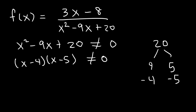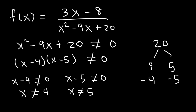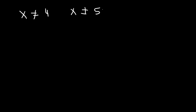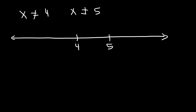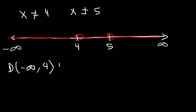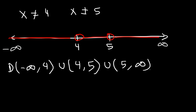So x minus 4 times x minus 5 cannot equal 0. Therefore x minus 4 cannot be 0, and x minus 5 cannot be 0. Adding 4 and 5 to both sides respectively, x cannot equal 4 and x cannot equal 5. To represent this in interval notation, I like to plot everything on a number line. If x can't equal 4, put an open circle; it can't equal 5 either. So the domain is: from negative infinity to 4 (not including 4), union 4 to 5, union 5 to infinity. So x can be anything except 4 and 5.